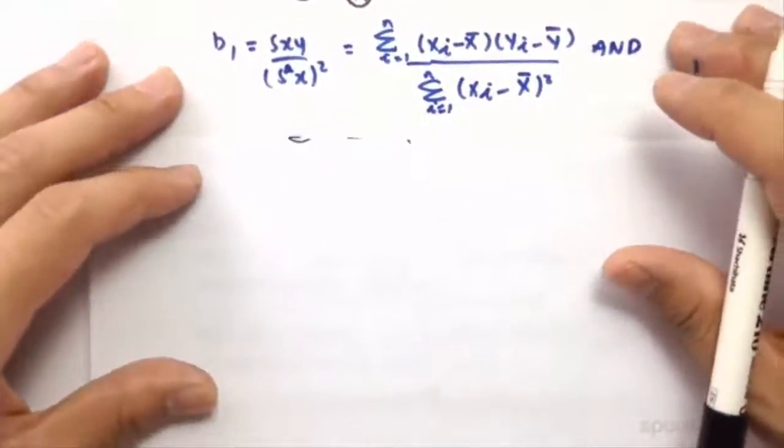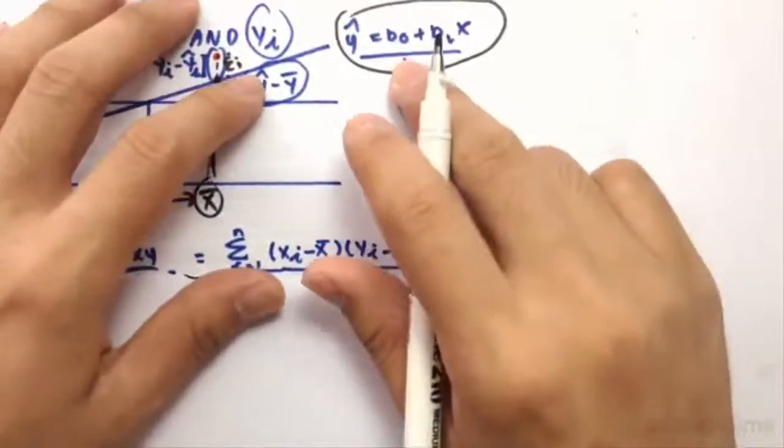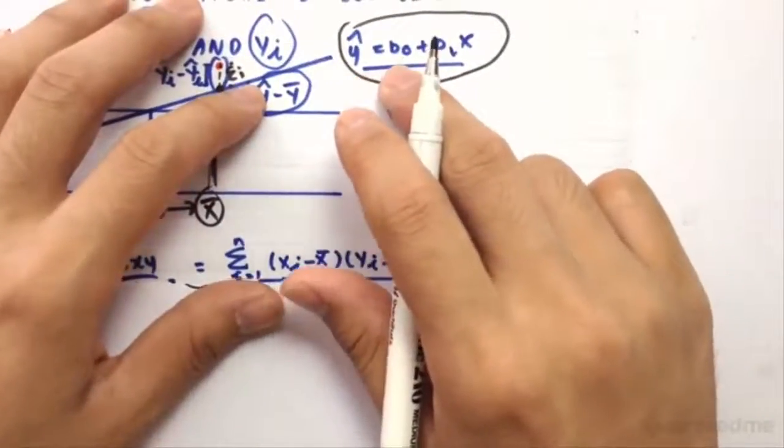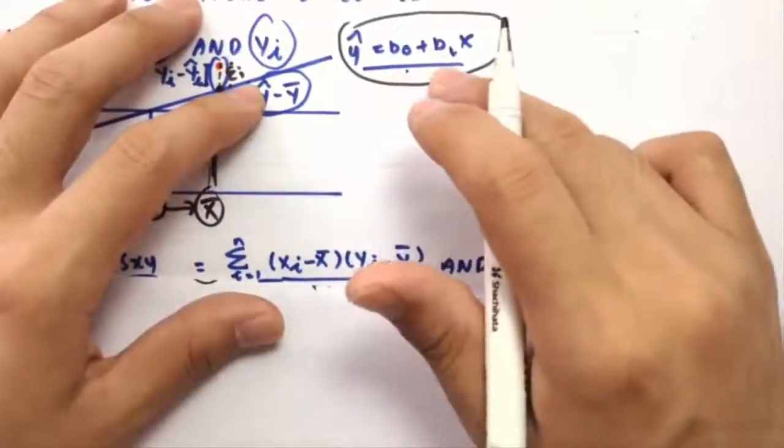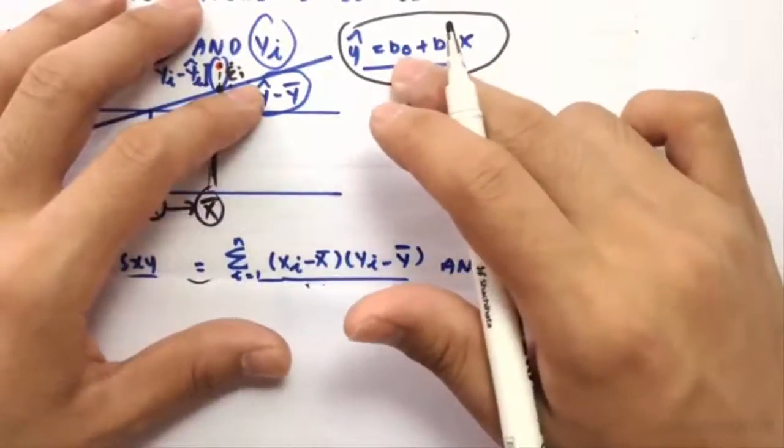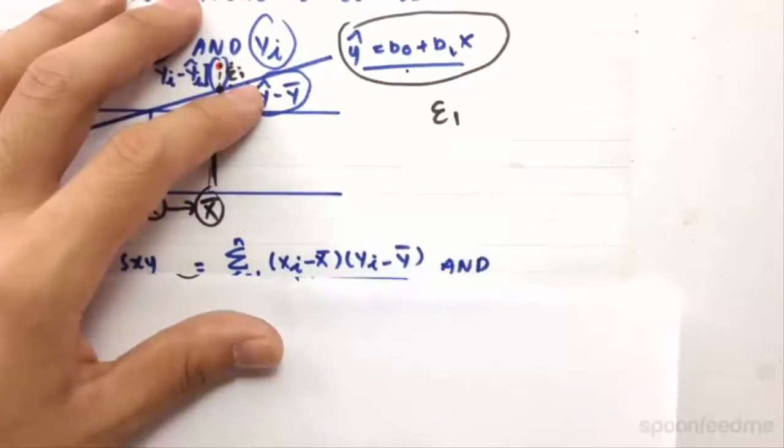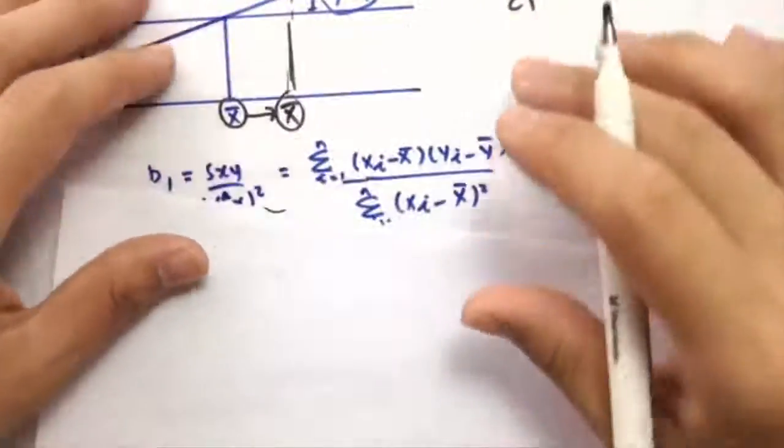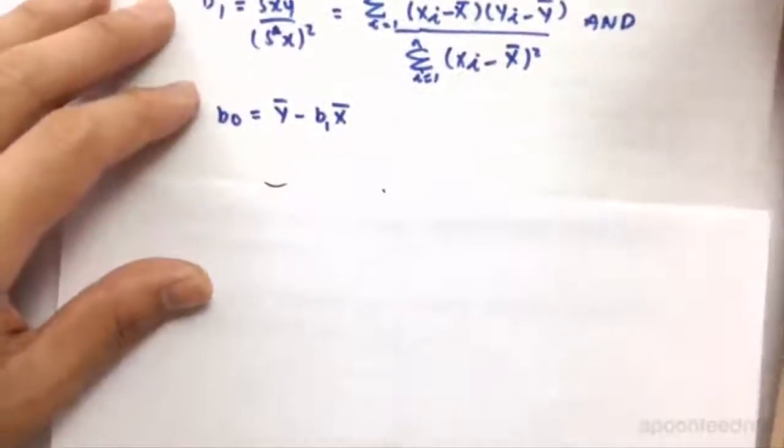Rightio. So if you do remember, the formula is y hat equals to little b with a subscript 0 plus little b with a subscript 1 multiplied by x. So b1 equals to the covariance over the variance squared of x.